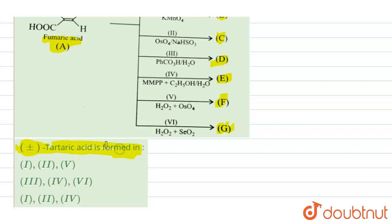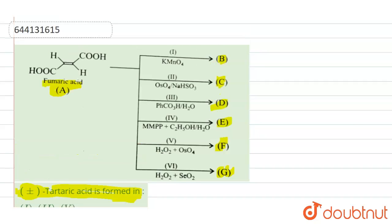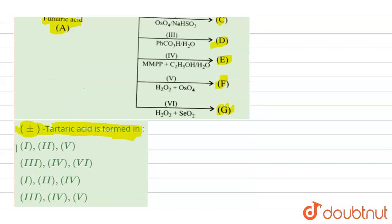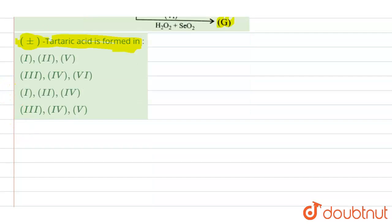Here, what we will do first, we will see which reagent leads to the formation of plus-minus tartaric acid, then we can answer the question. So now, first is our fumaric acid. So let's draw the reactant here.